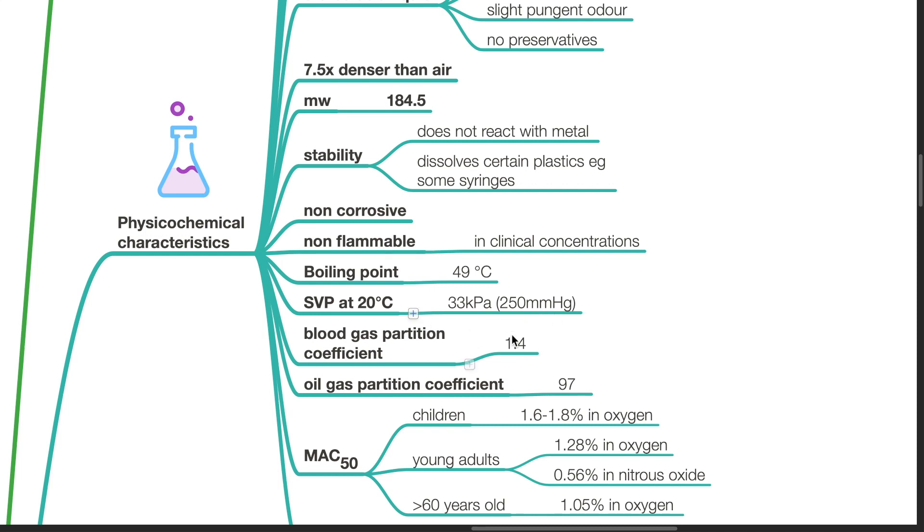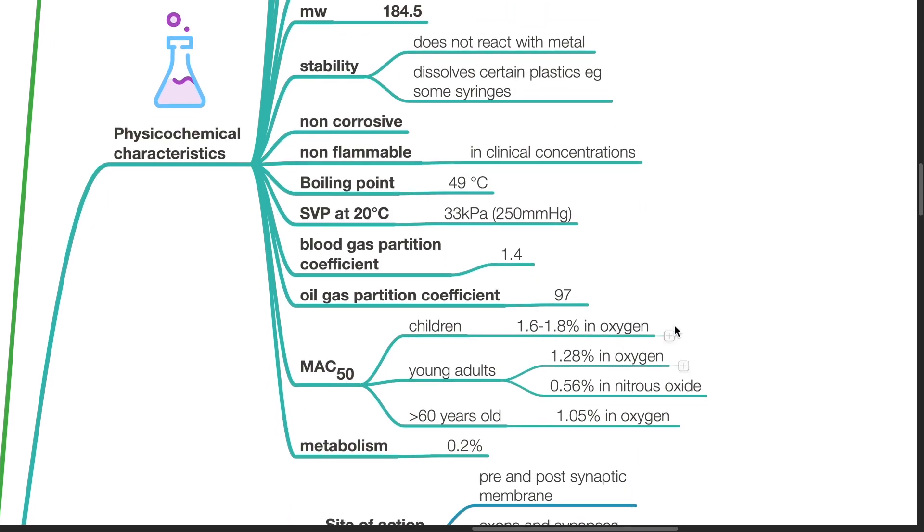Blood gas partition coefficient is 1.4. Oil gas partition coefficient is 97. MAC50 in children is 1.6 to 1.8% in oxygen. In young adults, it is 1.28% in oxygen and 0.56% in nitrous oxide.